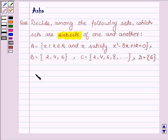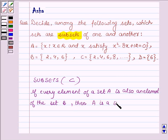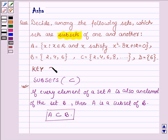So first let us learn what are subsets. If every element of a set A is also an element of the set B, then we say A is a subset of set B, denoted by A ⊂ B. So this definition is a key idea that we will be using in this problem to solve it.